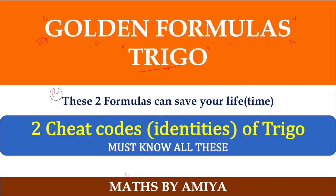So I am going to start again the golden formula series of the TRIGO. In this I am going to discuss two formulas which can save your life. These are the two cheat codes for the identity and believe me TRIGO is one of the easiest topics of maths because we have limited resources of TRIGO. We have limited formulas. Questions are created from there, whichever anyone can create.